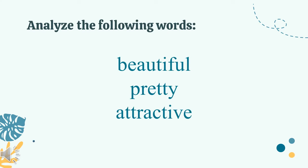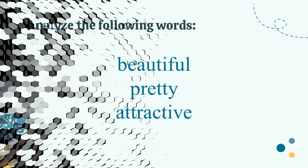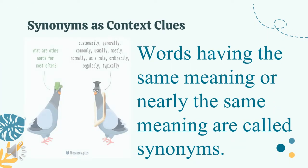Let's analyze the following words: beautiful, pretty, and attractive. These are what we call synonyms as context clues. A certain word is synonymous as a context clue when there are words having the same meaning or nearly the same meaning.